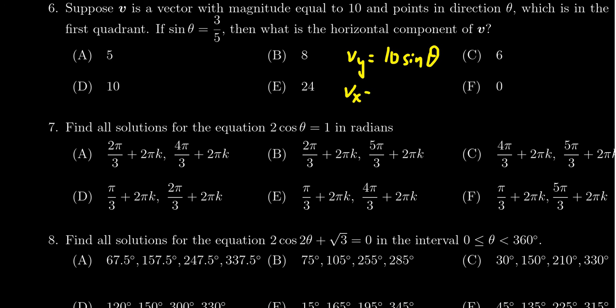The horizontal component is going to be Vx, which is 10 times the cosine of theta, the magnitude times cosine of the direction, for which we have to compute cosine real quick. We don't have a calculator, but we can do this easy enough, right?